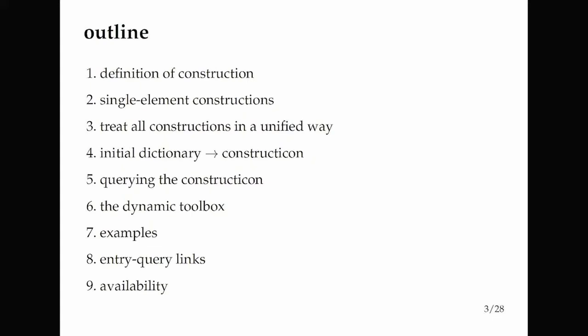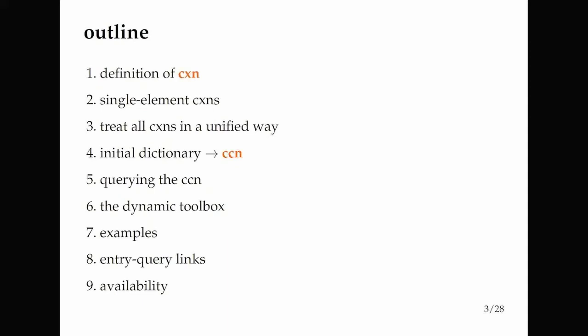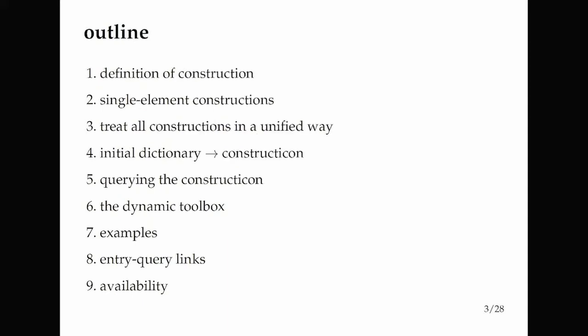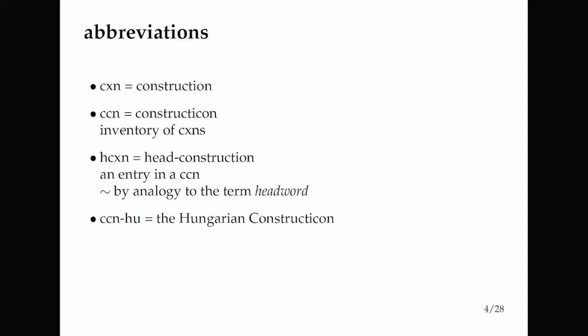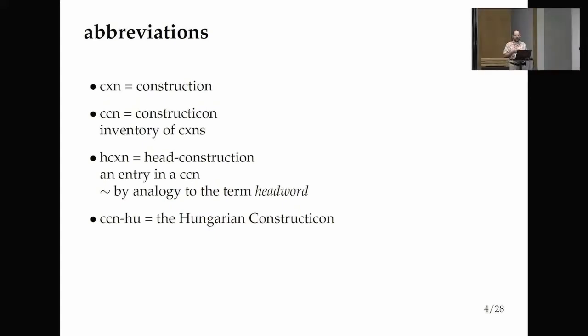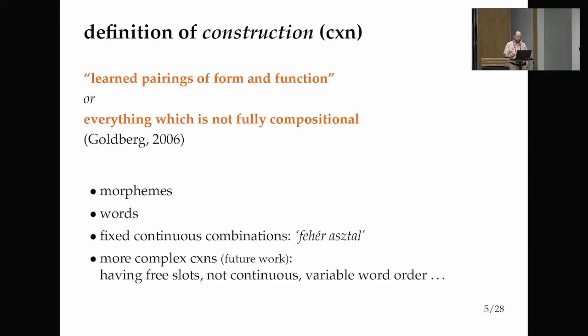Because "construction" and "constructicon" are so similar, I adopted abbreviations. CXN is the construction, CCN is the constructicon. This is a resource where the basic units are constructions, not words — so we won't have headwords but head constructions. H-CXN will be the head construction, and the Hungarian constructicon also has its own abbreviation.